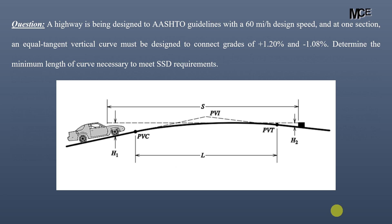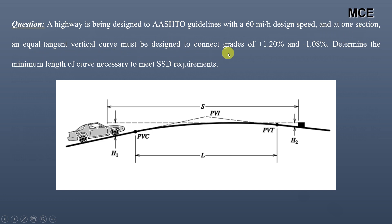Hello and welcome back to Master Civil Engineering. In this video you will learn how to find the minimum length of a vertical curve to provide adequate stopping sight distance according to AASHTO's guidelines. A highway is being designed to AASHTO's guidelines with a 60 miles per hour design speed. At one section, an equal tangent vertical curve must be designed to connect grades of plus 1.2% and minus 1.08%. We have to determine the minimum length of curve necessary to meet the SSD requirements.